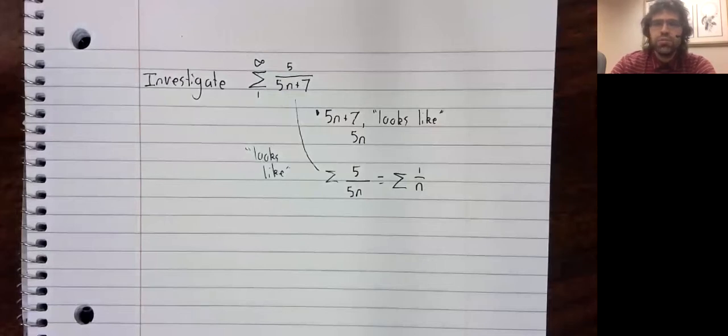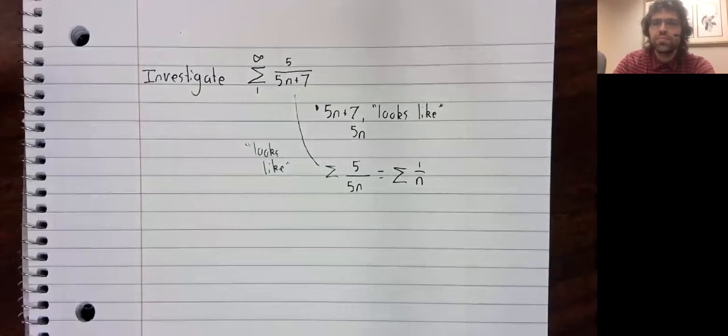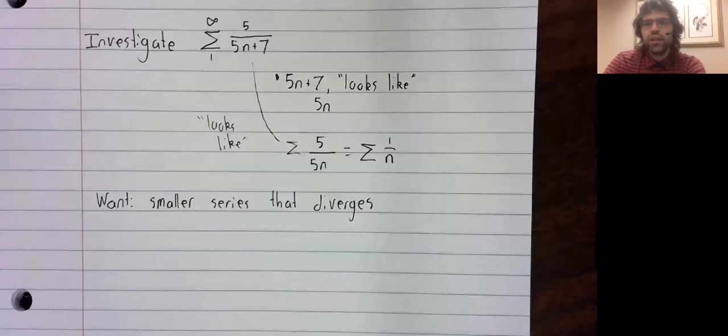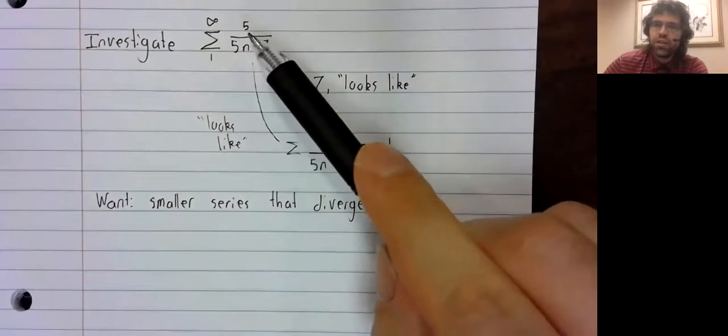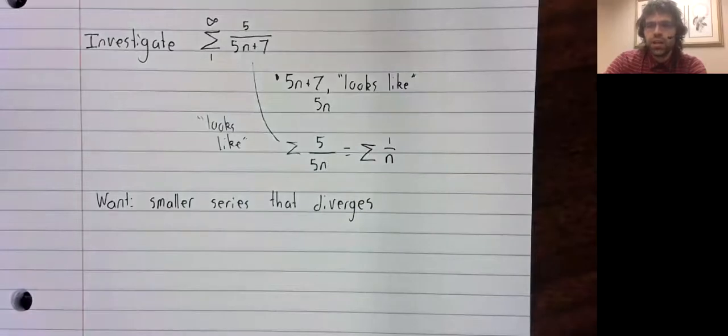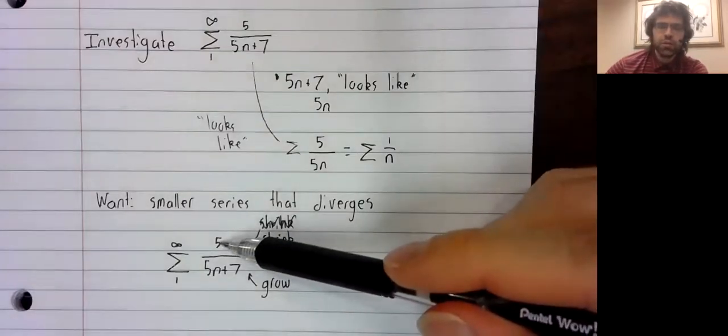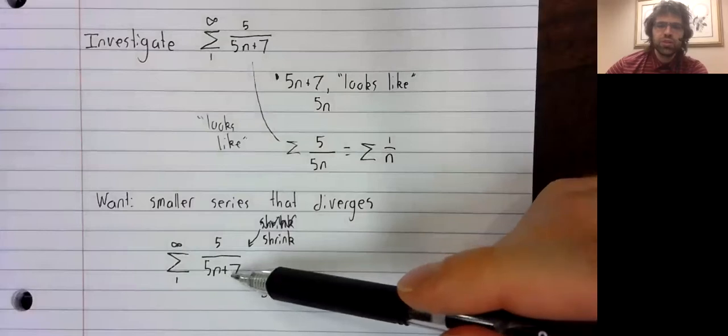Let's try to formalize our intuition using the comparison test. If the comparison test is going to show divergence, we need a smaller series that diverges. To make a fraction smaller, we can either shrink the numerator or increase the denominator.